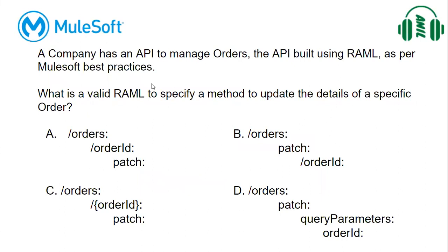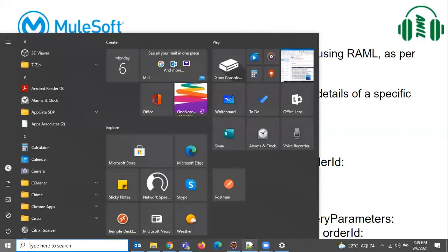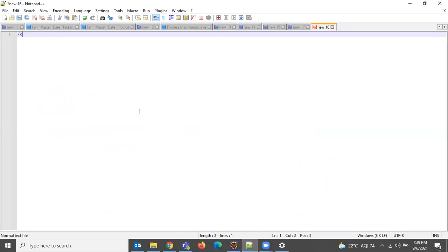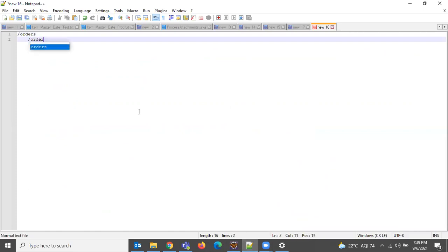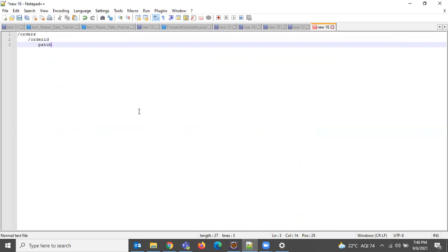A company has an API to manage orders. The API is built using RAML as per MuleSoft best practices. The question is: what is a valid RAML specification to define a method to update the details of a specific order? That means we'd have RAML structured with an order ID and a PATCH method.